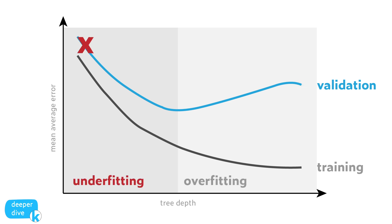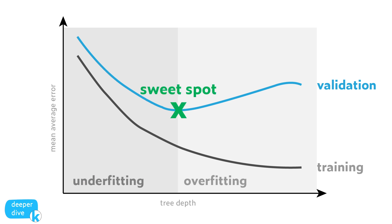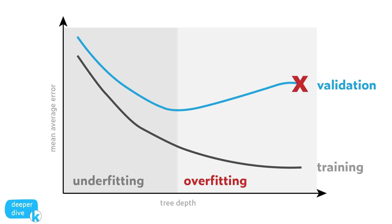Likewise, if we only allow our decision tree to have a small number of leaf nodes — let's say four, kind of like we saw in our earlier lesson — then we would have a model that has been underfit. Any predictions we try to make about housing prices will be so general as to be next to useless. When we start with just a couple of leaves, we're underfitting our model. As we add more leaves, we move into a sweet spot where our model is going to be pretty good at predicting housing prices on data it's never seen before. But if we keep adding leaves past our sweet spot, we'll likely end up overfitting our model.